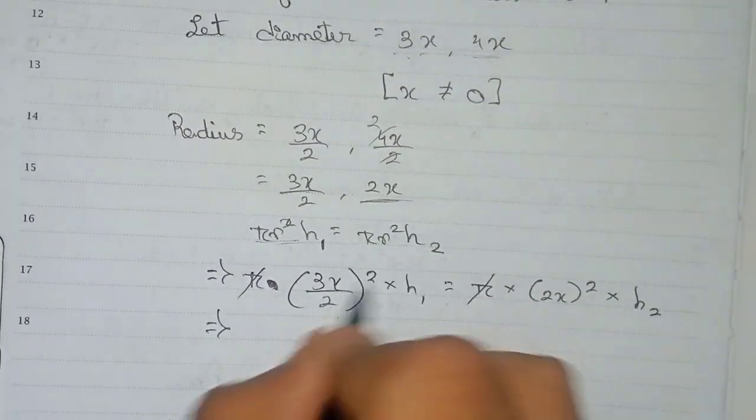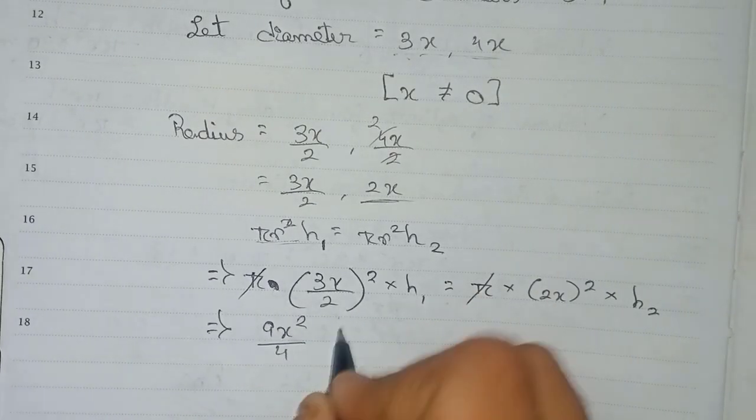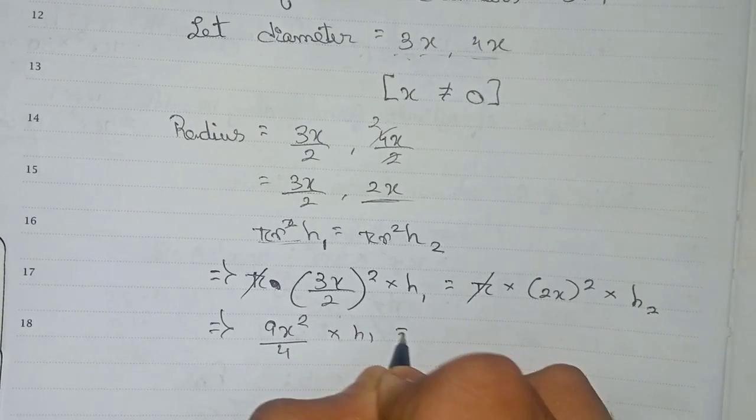So here 3 to the power 2 is 9, x squared by 2 to the power 2 is 4, into h1 is equal to h2. Wait, it's 4x squared h2.